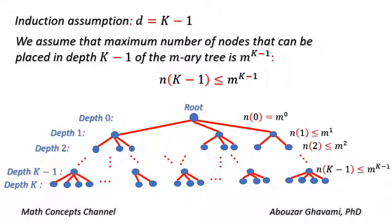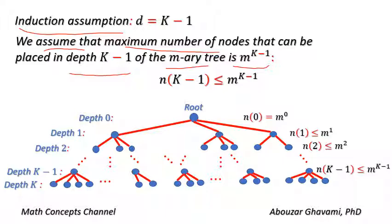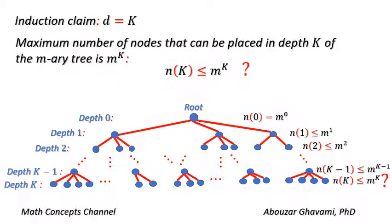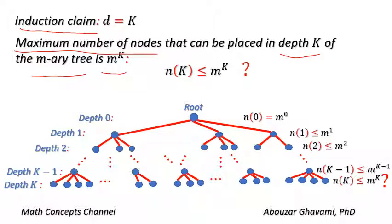Now we assume the induction assumption. We assume that the maximum number of nodes that can be placed in depth K-1 of the M-ary tree is M to the power of K-1. In other words, we assume that N(K-1) is less than or equal to M to the power of K-1. Now we prove the induction claim: using the induction assumption and hierarchical structure of the M-ary tree, we prove that N(K) is less than or equal to M to the power of K.